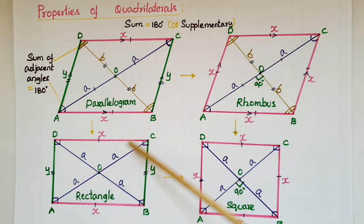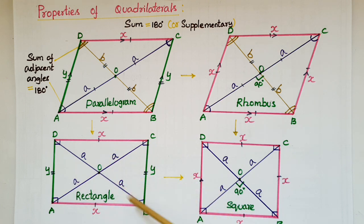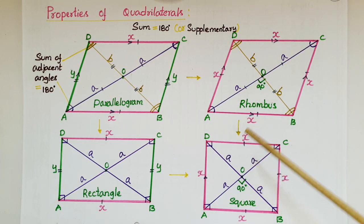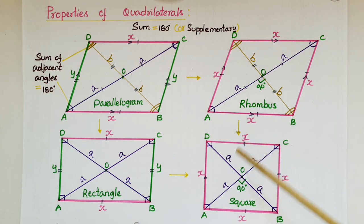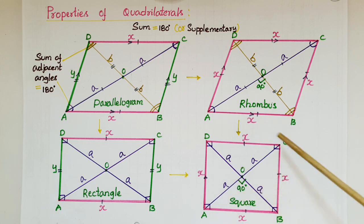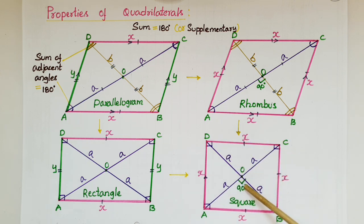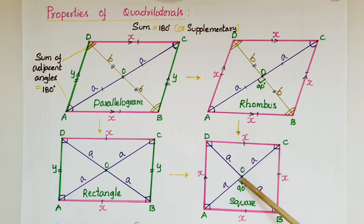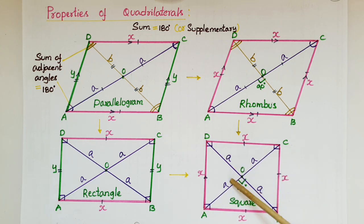In a rectangle, OA is equal to OC is equal to OB is equal to OD. Next is square. Square is a parallelogram in which all sides are equal and diagonals are equal and bisect each other at 90 degrees, so OA is equal to OC is equal to OD is equal to OB, and each angle is 90 degrees.